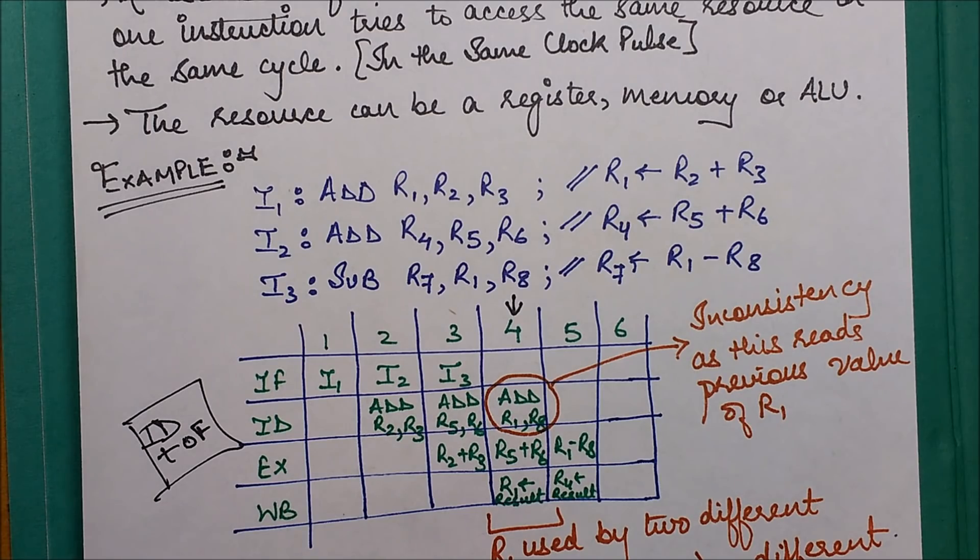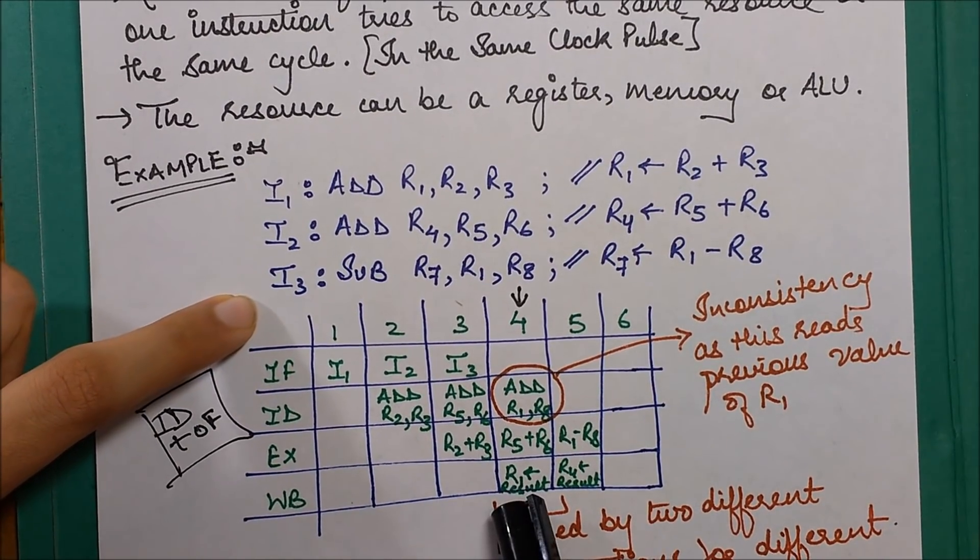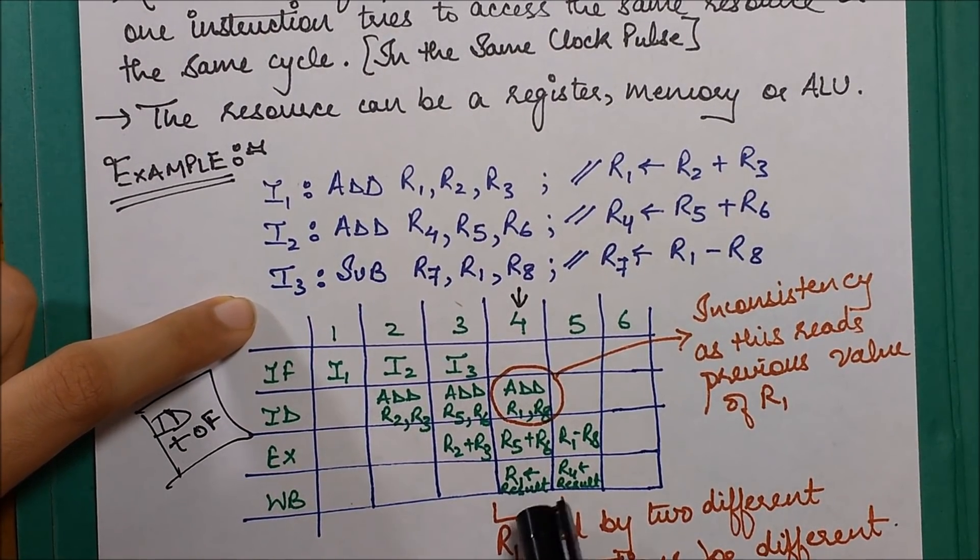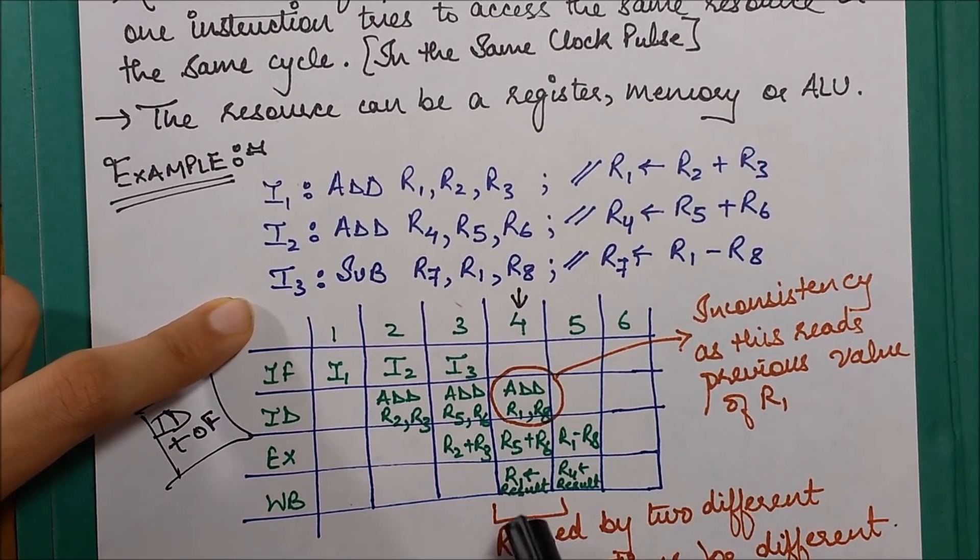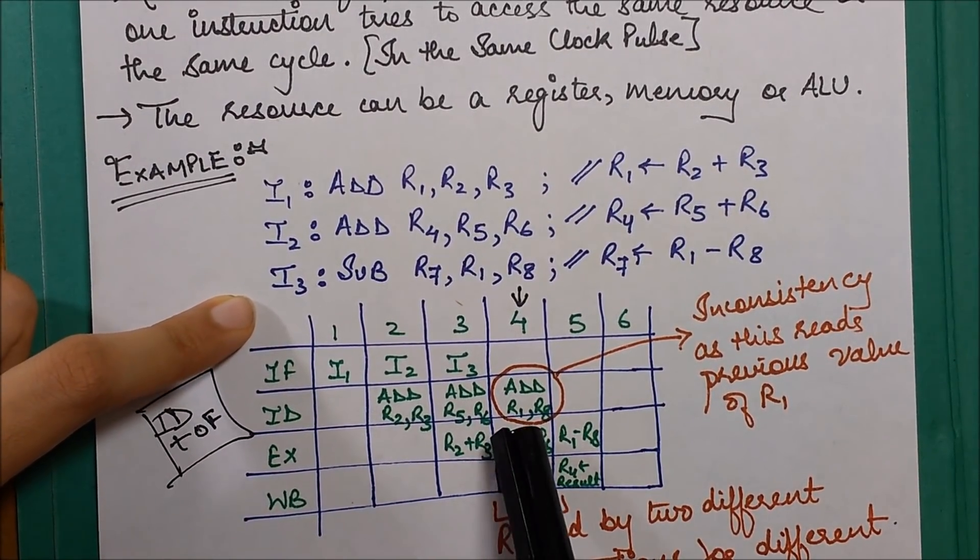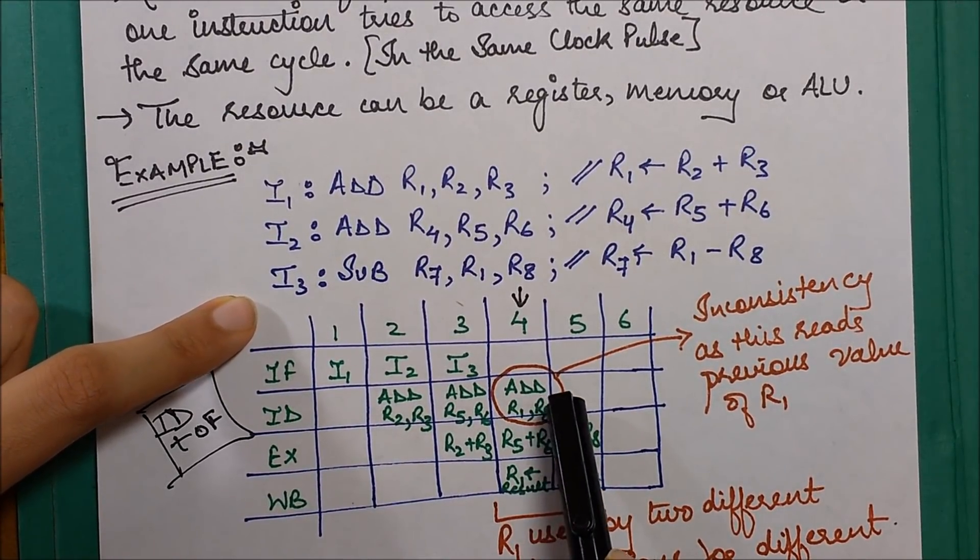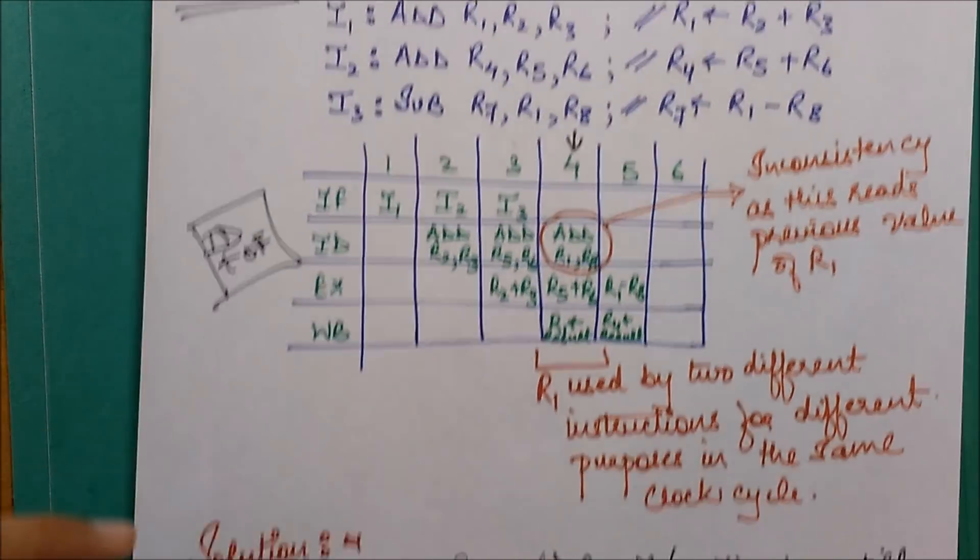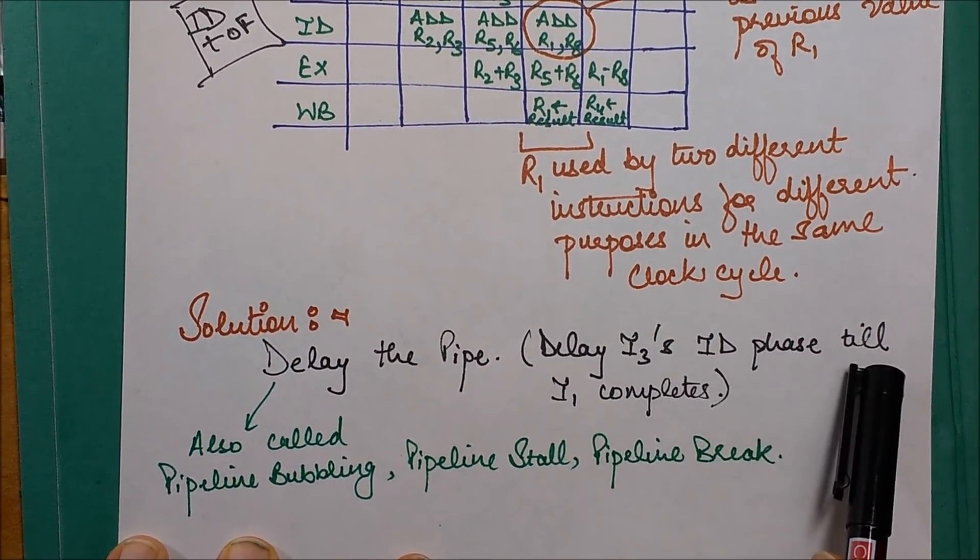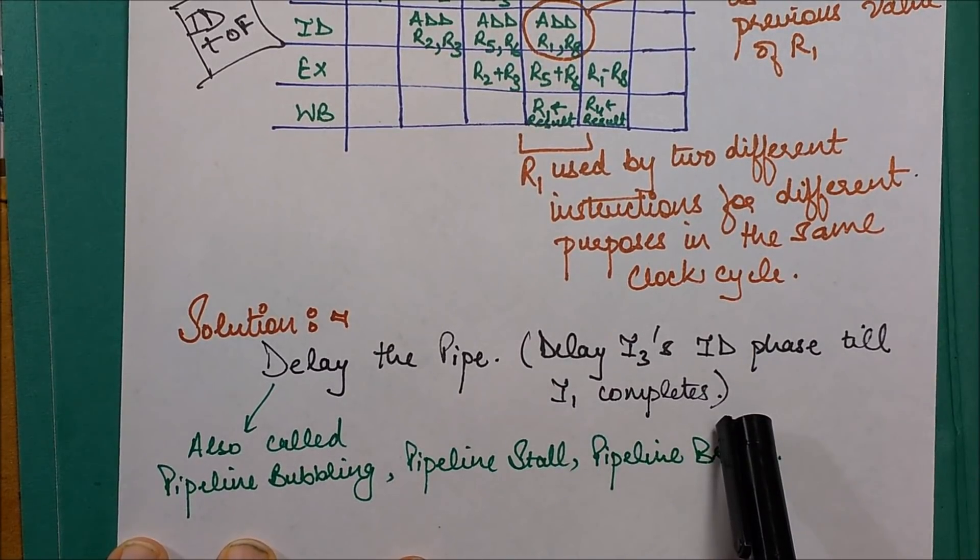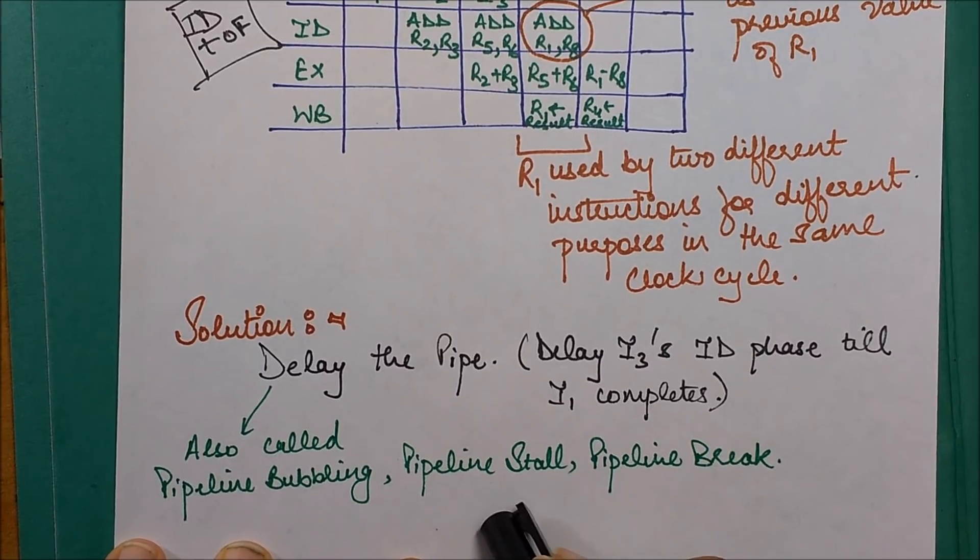Since I3 was coming after I1, you must have first stored the result in R1, delay the execution of this instruction till you're done with this, and then you can fetch this value of R1 for your next instruction I3. The solution is delay the pipe, also known as pipeline bubbling, pipeline stall, or pipeline break.